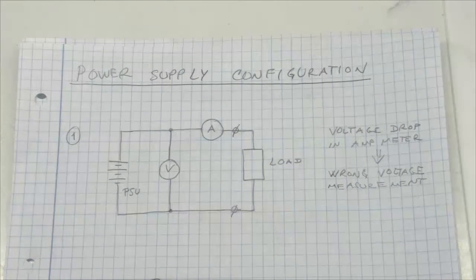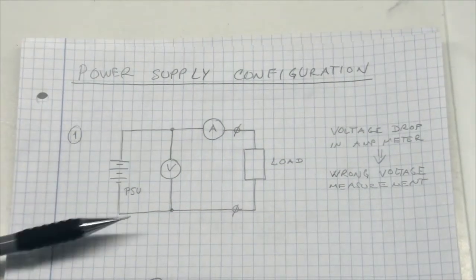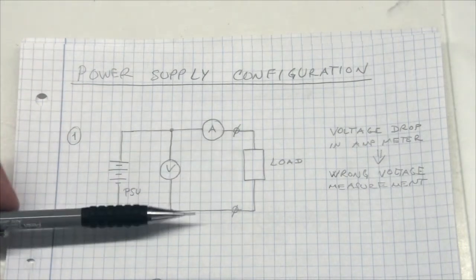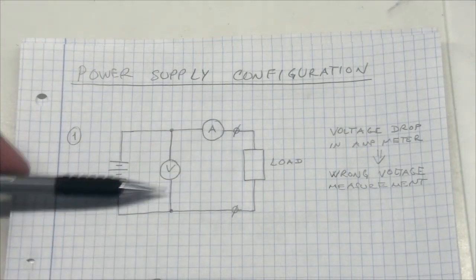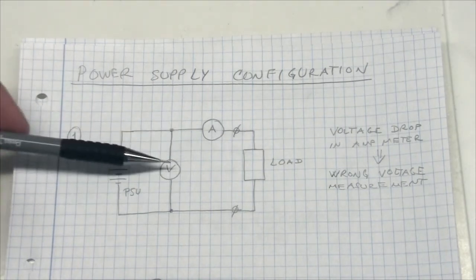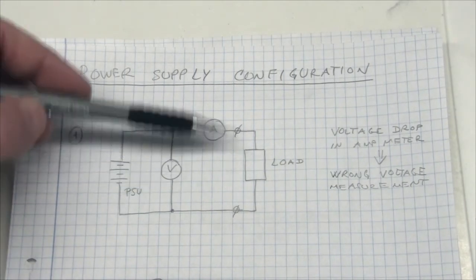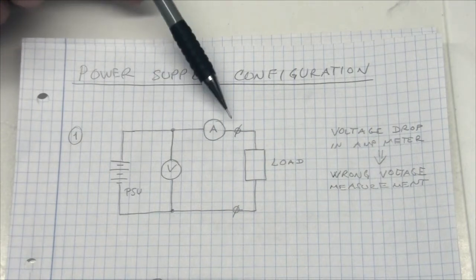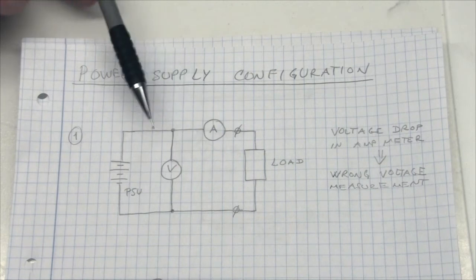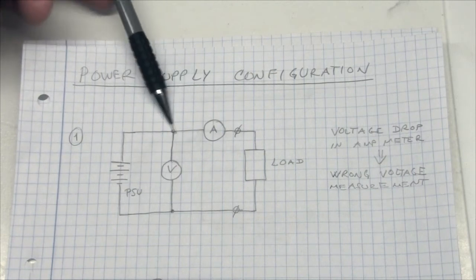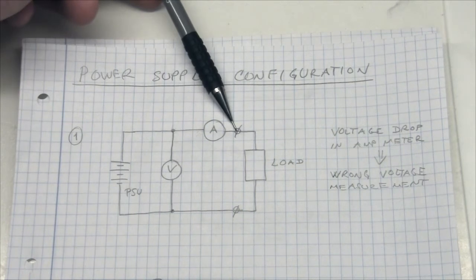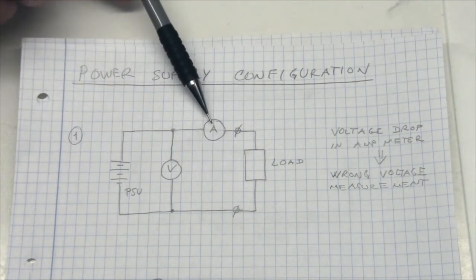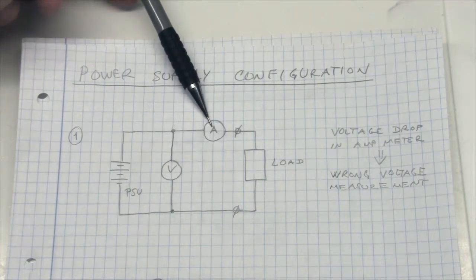The first one I'm showing here has the voltage across our power supply and the amp meter in series with the load. We would like to measure both the ampere and the voltage correctly. But in case this amp meter has a very high input impedance, we will have some voltage drop in the amp meter. The voltage that we measure here will be slightly higher than the voltage that we measure here. So for this configuration we have to be careful that the internal impedance of the amp meter is not too high.